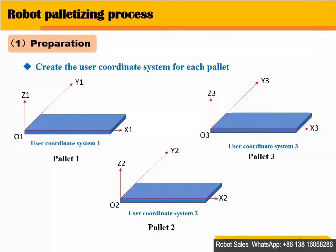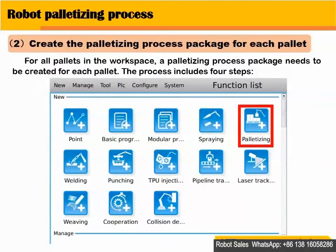Step 1: Preparation. You should create the user coordinate system for each pallet. Then, create the palletizing process package for each pallet. For all pallets in the workspace, a palletizing process package needs to be created for each pallet.